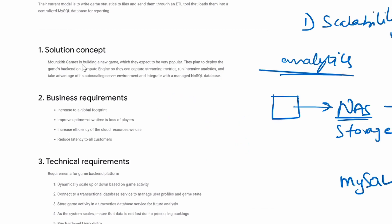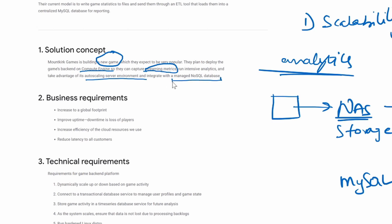Mountkirk Games is building a new game, so the focus is on the new game rather than the current on-prem games. They expect it to be very popular. The plan is to deploy game servers on Compute Engine and capture streaming analytics metrics. Other key goals include running intensive analytics, taking advantage of an auto-scaling environment, and integrating with a managed NoSQL database.